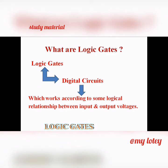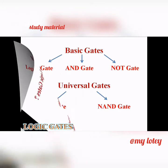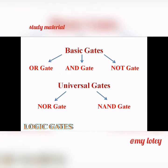First of all, what are logic gates? Logic gates are the digital circuits which work according to some logical relationship between input and output voltage. Now logic gates are of two types: first is basic gates and second one is universal gates. OR gate, AND gate and NOT gate are some basic gates, and NOR gate and NAND gate are some universal gates.